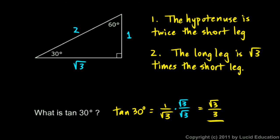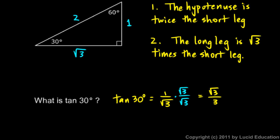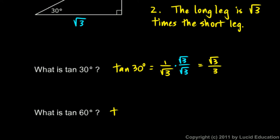So the tangent of 30 degrees equals √3/3 — that is the exact answer every single time. For the tangent of 60 degrees, we look at the 60-degree angle: its opposite side is √3 and its adjacent side is 1. So the tangent of 60 degrees is √3 over 1, which we simply write as √3. No further simplification is needed.